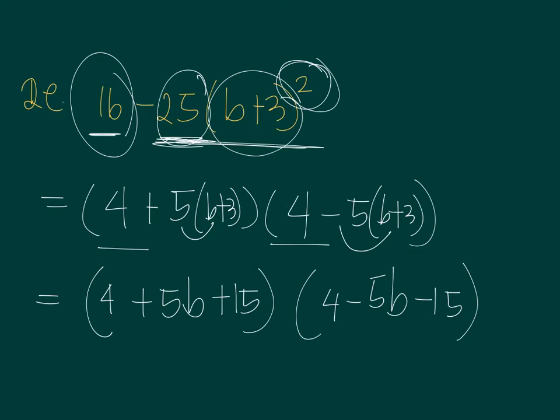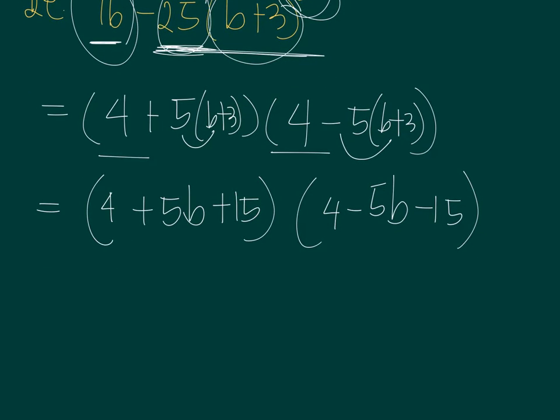So this is almost the final answer. We just have to combine any values that can be combined. 4 and 15 will be 19, so 5B plus 19. And then the other is negative 5B minus 11.